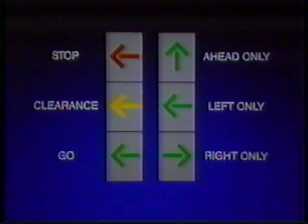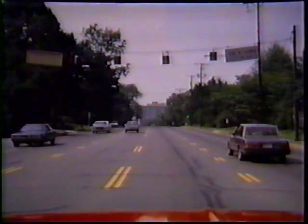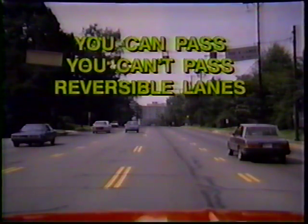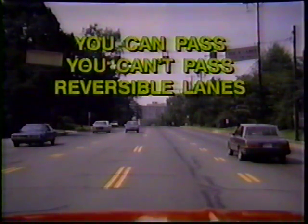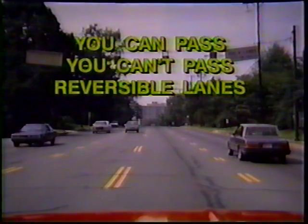If the red arrow is flashing, that's the same as a red flashing traffic light — stop and make sure the way is clear before going in the direction of the light. There are signs on the pavement too. What do double dashed lines mean? You can pass? You can't pass? Reversible lanes? Double solid yellow lines mean no passing; double dashed lines mean reversible lanes.